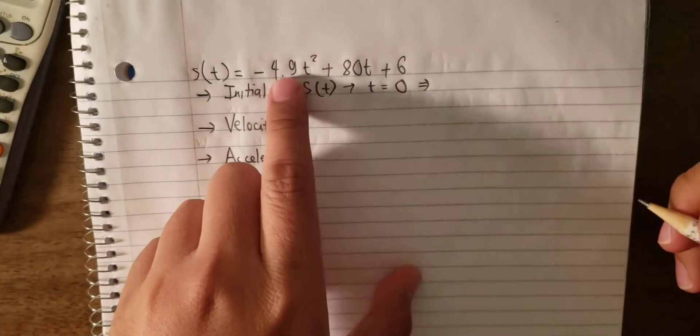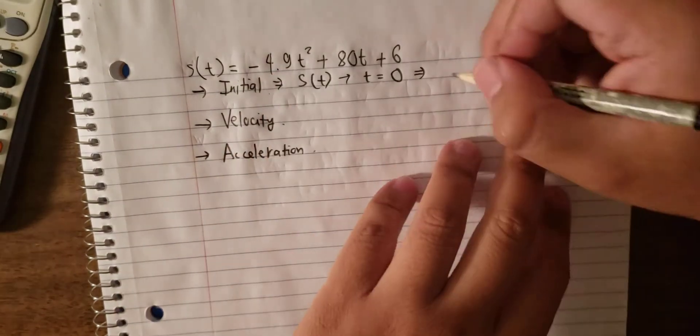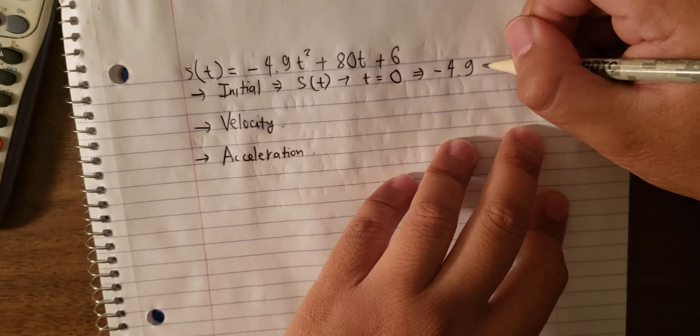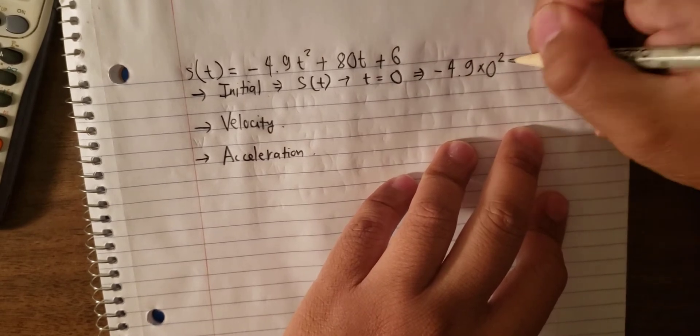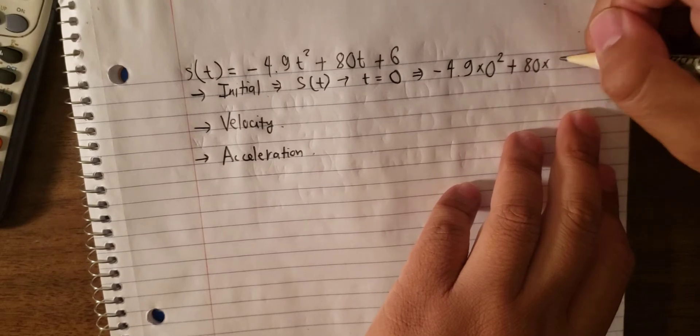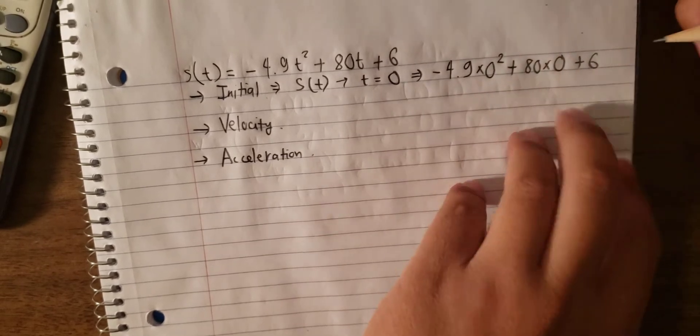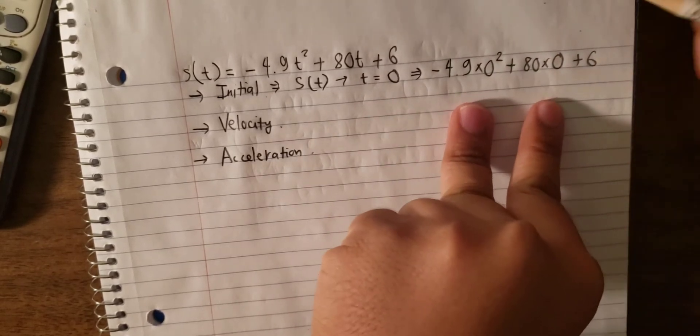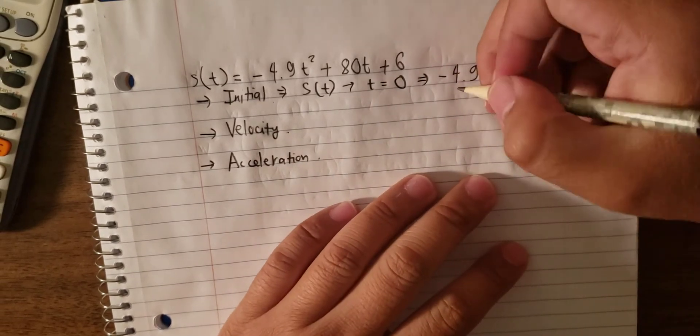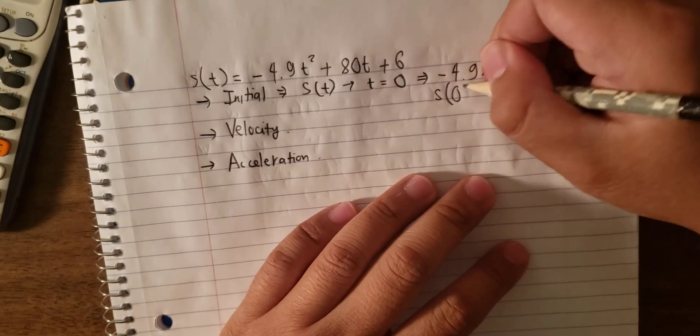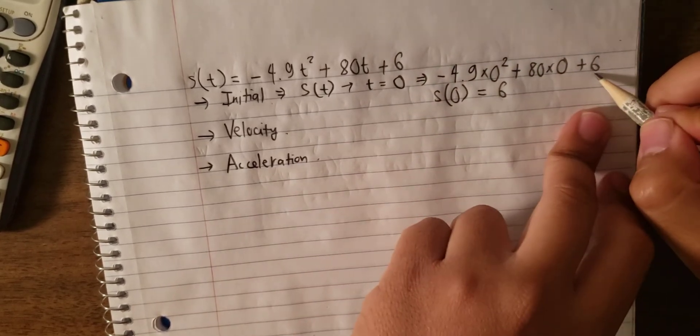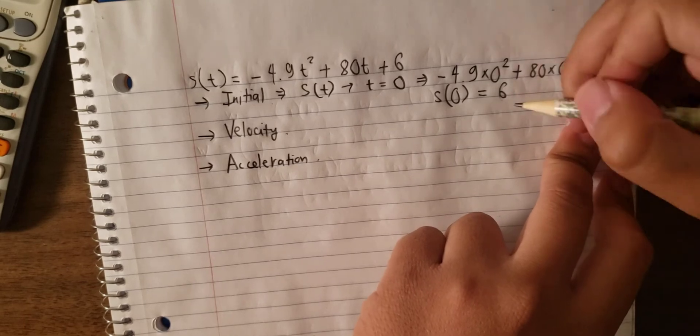So we just apply 0 in this function. We have minus 4.9 multiplied with 0 power 2, and we have 80 multiplied with 0 and 6. We know that any number multiplied with 0 will become 0, so we can conclude that s(0) equal to 6.